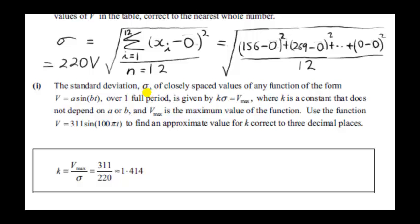The standard deviation sigma of closely spaced values of any function of the form V equals A sine BT over one full period is given by K times sigma equals V max. K is a constant that does not depend on A or B. That's these two values here. V max is the maximum value of the function. So we want to calculate K for this particular function. So as you can see, this function here has the form A sine BT. So we can apply this formula. And of course, we divided up our function over one full period. So we saw before that the maximum value of the function is this number here. Well, they're calling it A here. I call it the amplitude earlier. Well, that's 311. So V max is 311. And sigma, we just worked out previously, that's 220. So this number K is 311 divided by 220, which is approximately 1.414.